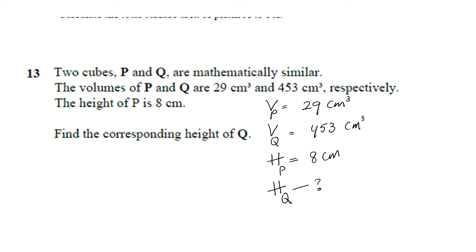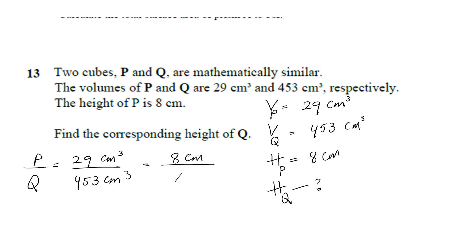So let us work out what we are going to do. We have P and Q. The volume of P is 29 cm³ and the volume of Q is 453 cm³. The height of P is 8 cm and we have to find the height of Q. Since volumes are given, we convert to cm by taking the cubic root — the cm³ and the cubic root cancel, so we get the answer in cm.